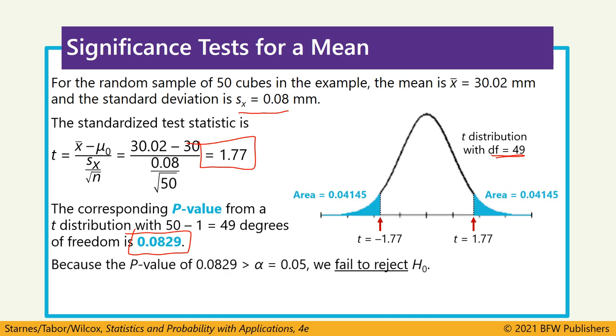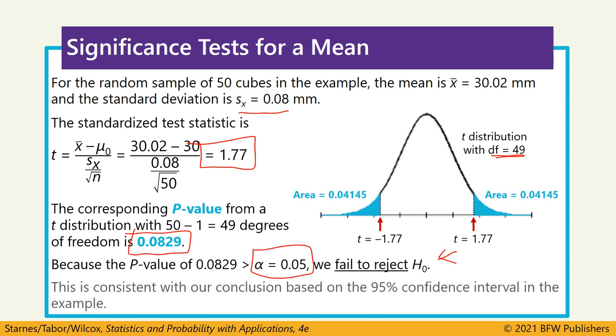And because that is greater than our alpha level of 0.05, we would fail to reject the null hypothesis, which is the same conclusion we drew when we looked at the confidence interval.